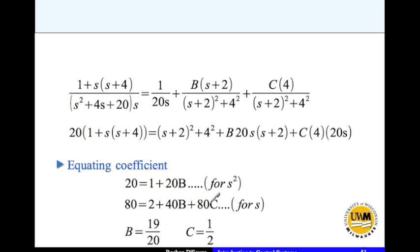You solve for B and C. You get B equal to 19 divided by 20, and C is half.